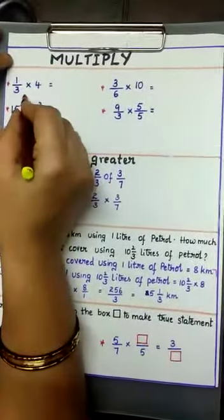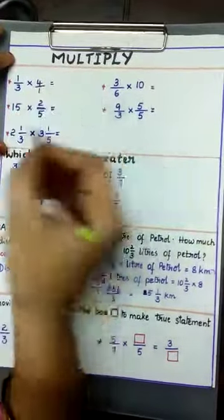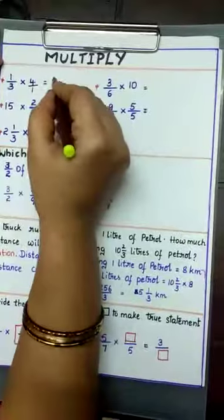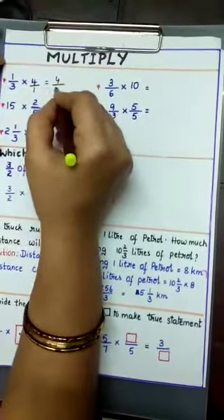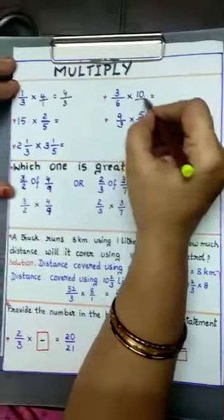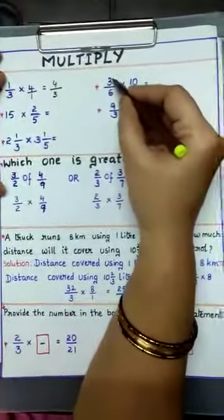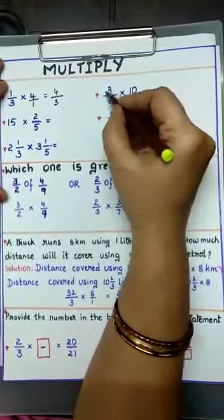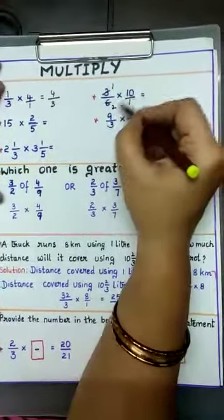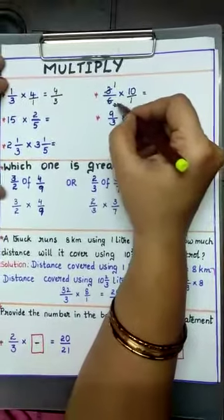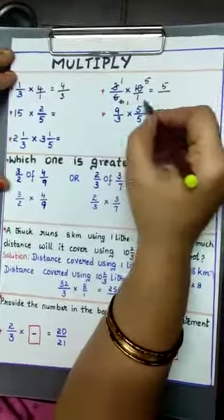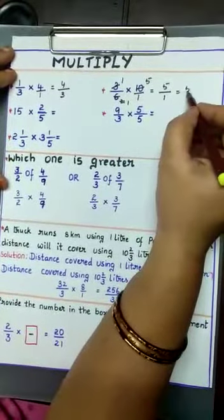The first one is 1/3 into 4. Write 4 as 4/1. Since 3 and 4 have no common factor, directly multiply the numerators: 1 times 4 is 4, and 3 times 1 is 3, giving 4/3. Next: 3/6 into 10. Write 10 as 10/1. Here 3 is the common factor of 3 and 6, giving 1 and 2. Then 2 and 10 have common factor 2, giving 1 and 5. So 1 times 5 is 5 by 1 times 1, which equals 5.